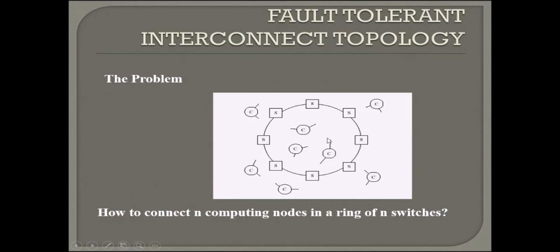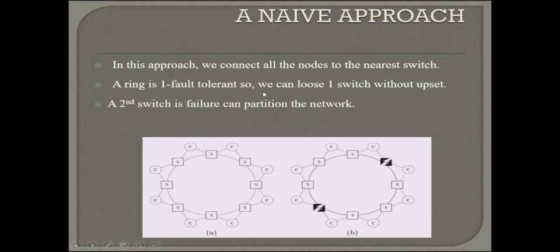The problem is we have various switches and computing nodes in a ring with n switches. How to make a fault-tolerant interconnect topology? This is a simple approach where we connect all the nodes which are nearest to switch. A ring plus one forward ring is always one fault-tolerant, so we can lose one switch without upset.